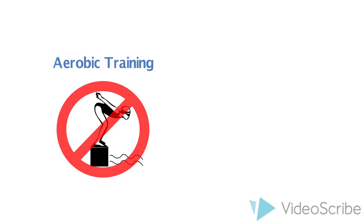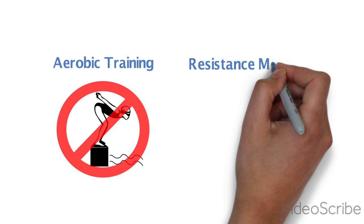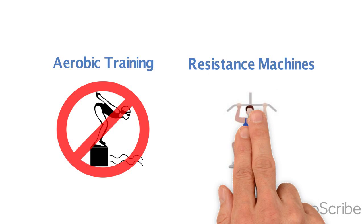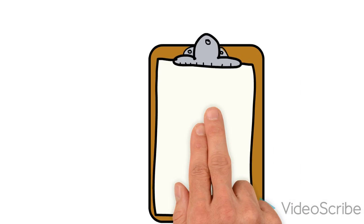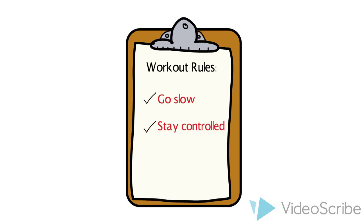In addition, resistance training machines are not recommended since this requires forward bending and twisting of the spine to perform the exercise. Forward bending and twisting may add excess pressure, causing additional fractures. Therefore, slow and controlled movements are recommended.